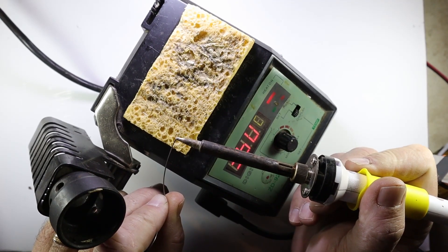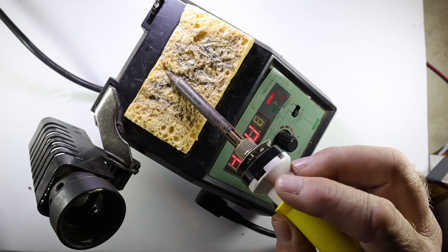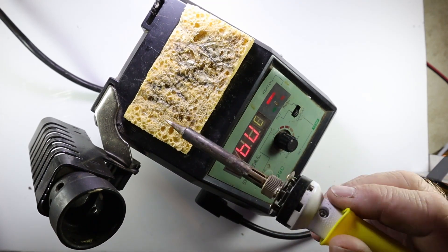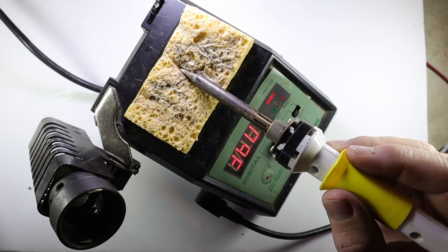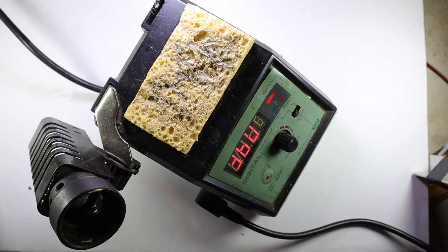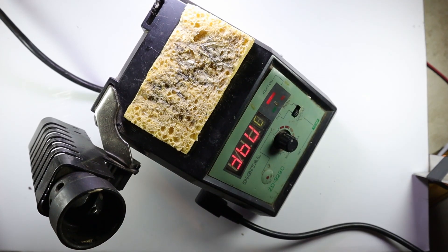Make sure you clean the tip of your iron regularly. Use the sponge at the top of your station, just wet it a little bit and it will work perfectly to get you a nice and clean solder tip.